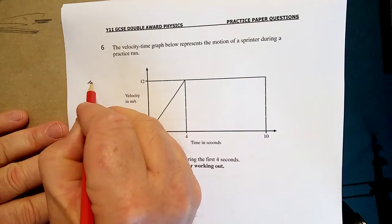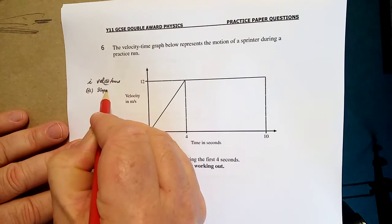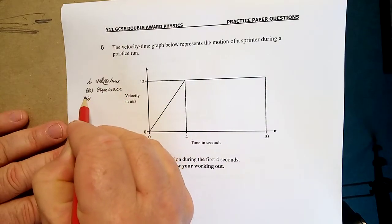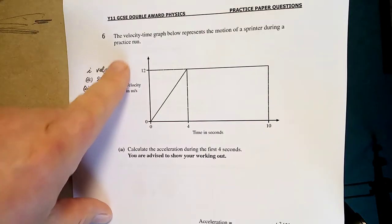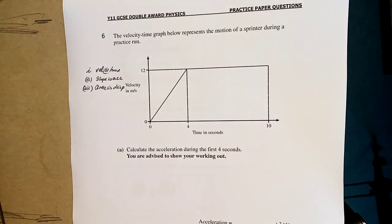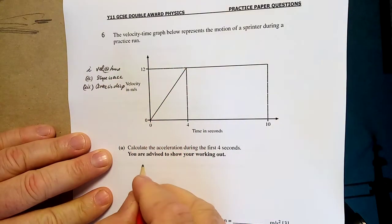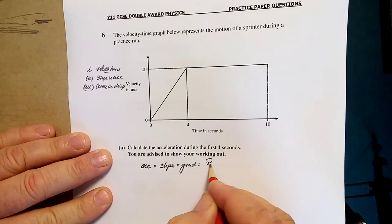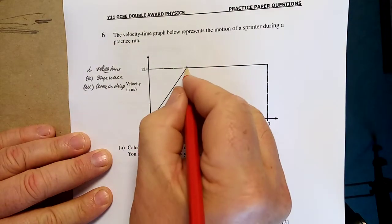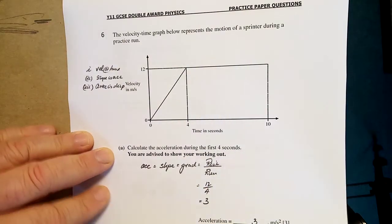Next question - velocity time graph. Three things, write it down. One - velocity at a time. Two - slope is acceleration. And three - area is displacement. Happy days. See if you don't know that, can't do the question. The velocity time graph below represents the motion of a sprinter during a practice run. This could be me. Calculate the acceleration during the first four seconds. The acceleration is the slope. Acceleration is slope. Now, name for slope - gradient. How do you work it out? Rise over run. Mark for that. What's the rise? There's it there, see that rise - 12 over 4 equals 3, 3 meters per second squared.